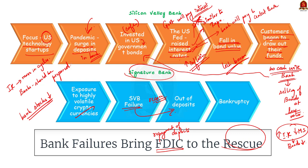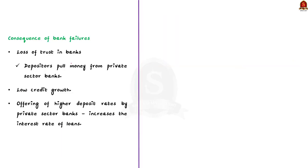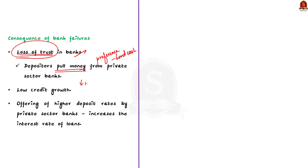Let us see some of the consequences of bank failures. Firstly, when a bank fails, depositors lose trust in banks and start withdrawing deposits, preferring to keep cash with them — this happened in 2008, and when rumors of US bank collapse spread to India, depositors panicked and pulled money from private sector banks in India too. So the first consequence is loss of trust. Secondly, when people pull out funds, there is less deposit with private banks, ultimately leading to lower credit growth. And finally, to encourage deposits, private sector banks are forced to offer higher deposit rates, which may increase loan interest rates and harm the economy as a whole.